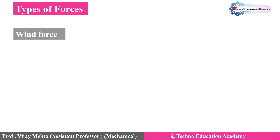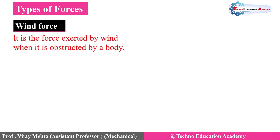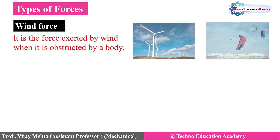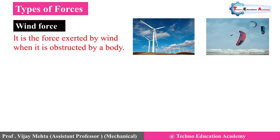The next one is wind force. It is the force exerted by wind when it is obstructed by a body. An example is a windmill — when the wind strikes the blades of the windmill turbine, it rotates the blades and produces electricity.